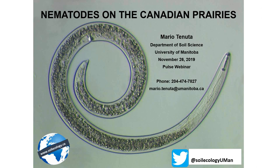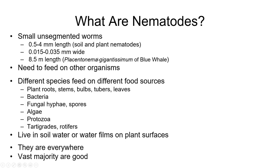Let's launch in. What are nematodes? First thing people ask is: is it a nematode or a nematode? You can call it whatever you want — it's like tomato, tomato. I usually say nematode. They are worms, but not earthworms — they're not similar to earthworms. These are small, unsegmented worms. The ones that live in soil and plants are small — a maximum of a couple of millimeters in length. You can hardly see them with your eye, and they're usually very thin and narrow.